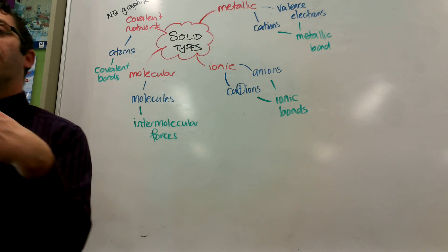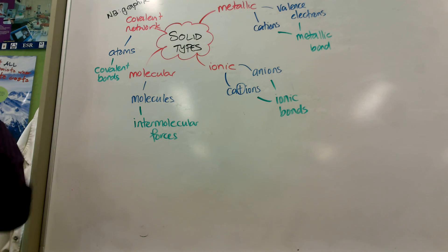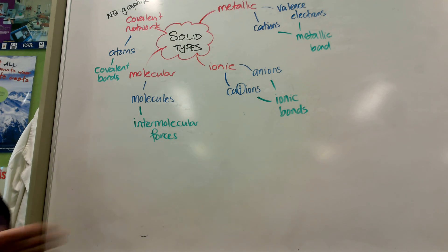We call it a sea of valence electrons because it implies that it can flow, like the ocean. And that's exactly what can happen. Electrons are motile. They are able to move. All of the valence electrons from all of the atoms go together to create that sea of valence electrons.